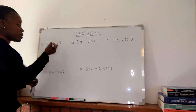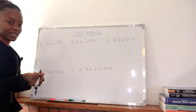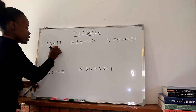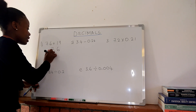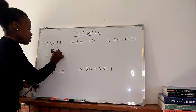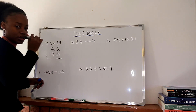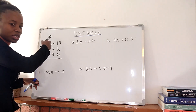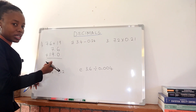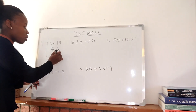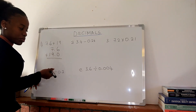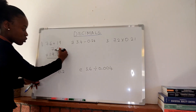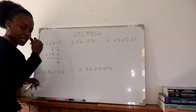So we have 7.6 plus 19. We write it as 7.6 plus 19.0. The units must be aligned — this one is the units, and 19 is also the units, so they should be along the same line. So 6 plus 0 is 6. Make sure that your decimals, when you are adding or subtracting, are straight.